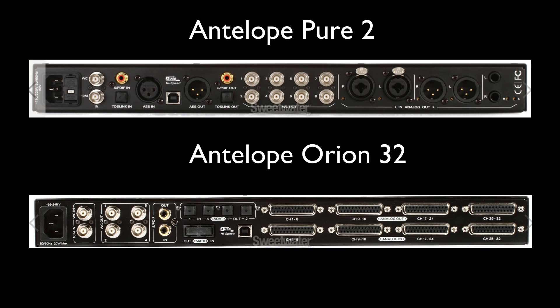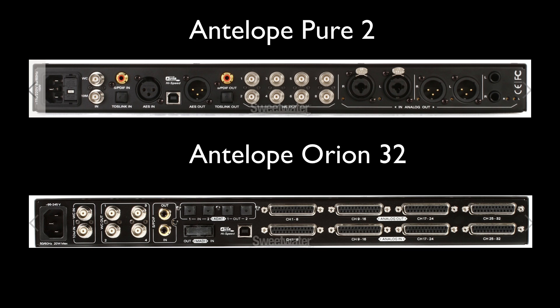For the A to D conversion side we do the opposite. We start from the Pier 2 — we want to go SPDIF out of the Pier 2 into SPDIF in on the Orion. Therefore when we record into the Pier 2, which has analog inputs on the right side, what we record into the Pier 2 gets converted to digital. The digital signal would come out of the SPDIF out and come into the Orion SPDIF in as digital, continuing as digital, and that would then show in the DAW.